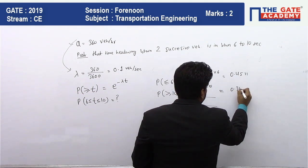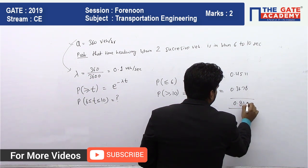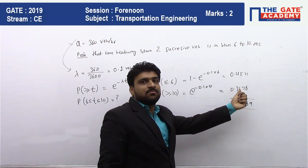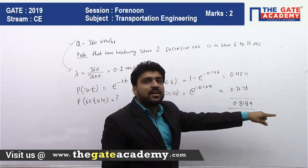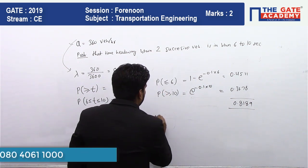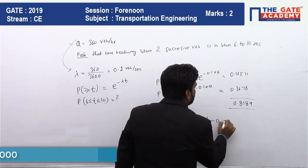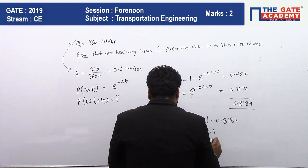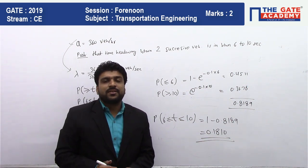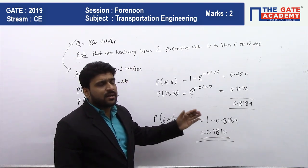The total probability of a vehicle arriving either less than 6 seconds or more than 10 seconds is 0.4511 + 0.3678 = 0.8189, which is about 81%. So the probability that a vehicle will arrive in between 6 to 10 seconds is one minus 0.8189 = 0.1810, which is approximately 18%. That is the probability for two successive vehicles.